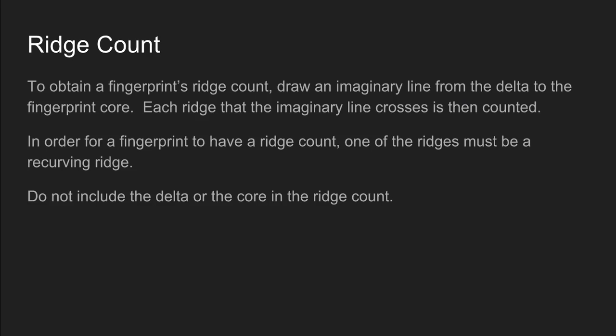So how do we figure out a fingerprint's ridge count? To obtain a fingerprint's ridge count you draw an imaginary line from the delta to the fingerprint core, and then each ridge that imaginary line crosses is counted. It's important that we correctly identify the type lines, correctly identify the exact location of the delta, and correctly indicate the exact location of the core. In order for a fingerprint to have a ridge count, one of the ridges must be a recurving ridge. Also important: we do not include the delta or the core in the ridge count.